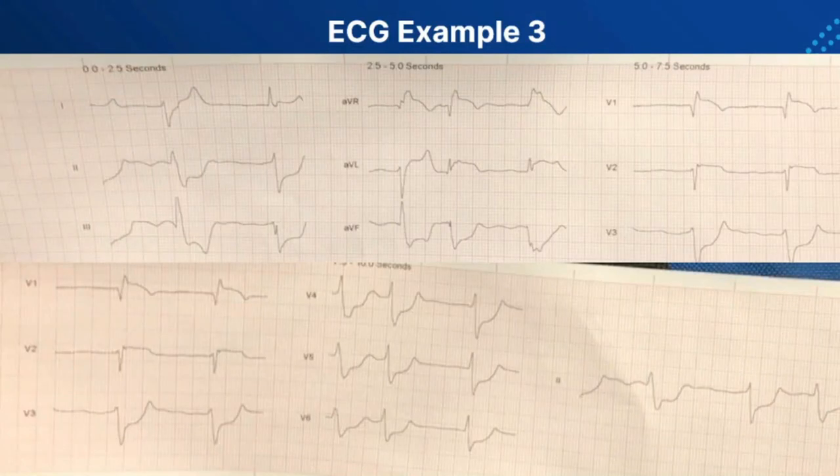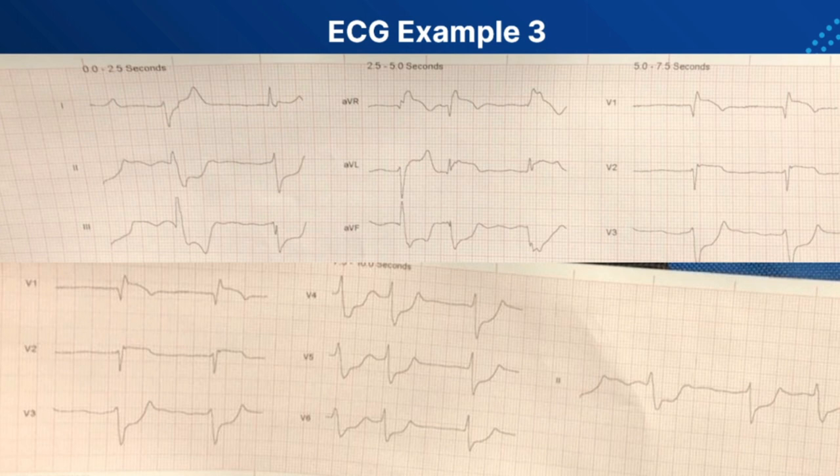ECG Case 3 is also mimicking a STEMI, but more of a lateral and septal STEMI. You've got depression in leads II, III, and aVF, a little elevation in lead I, aVL is elevated, and V1 and V2 are elevated. It looks very wide and bizarre — and that's your key with hyper-K.